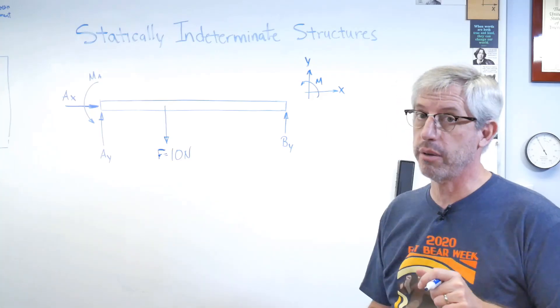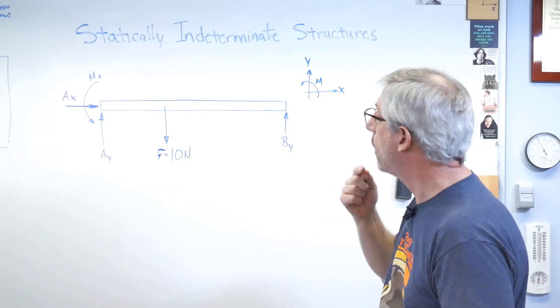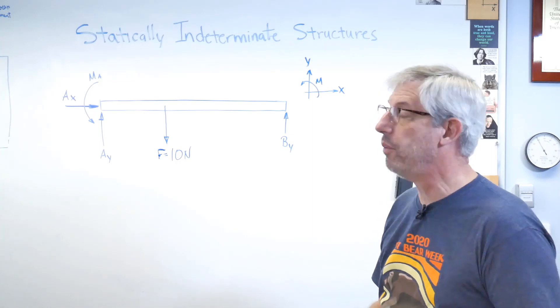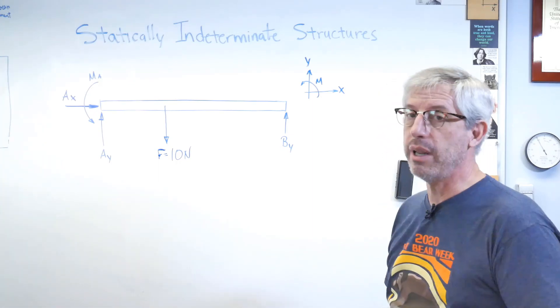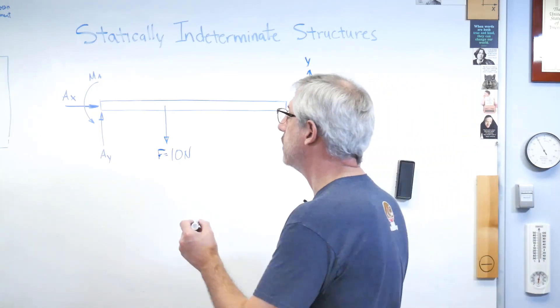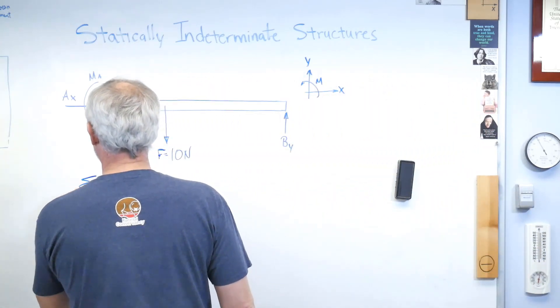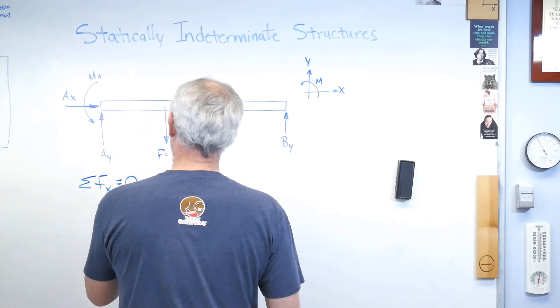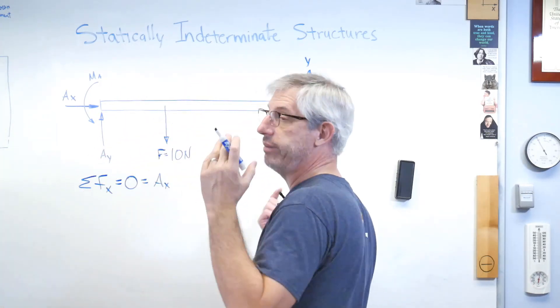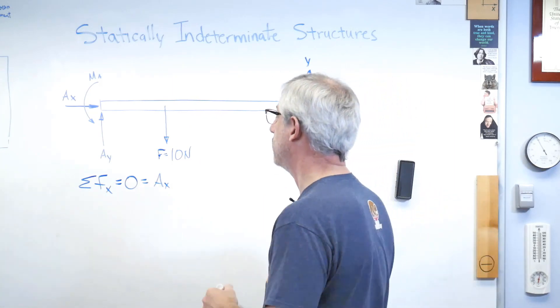Step three: let's write out some equations of equilibrium. There aren't any forces in the x-direction, so let's write that one out first. Sum of the forces in x is zero, and that's Ax, and that's it. So we know Ax is zero.